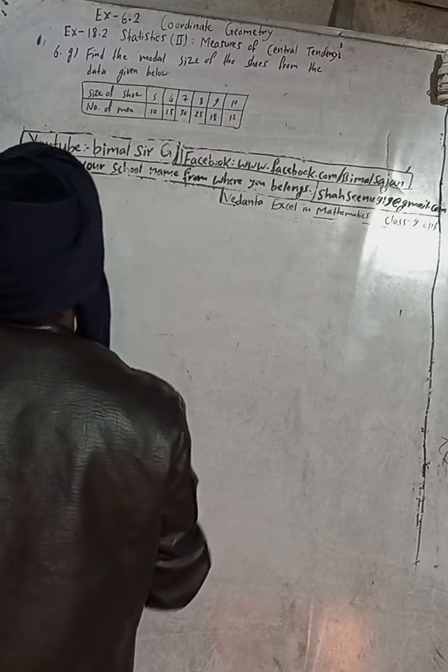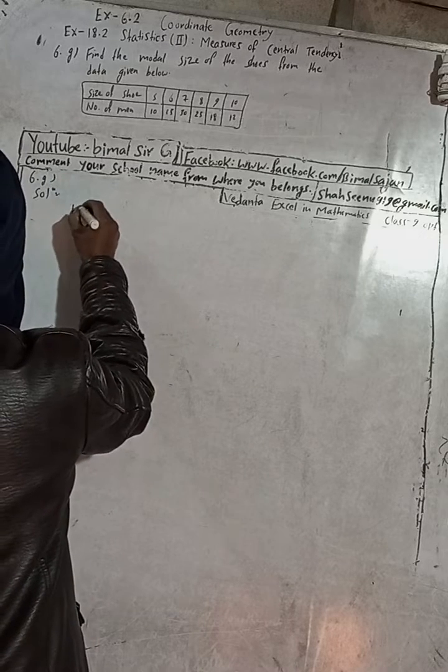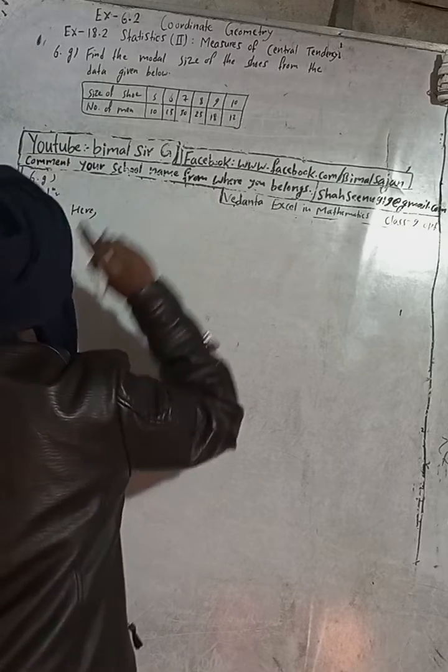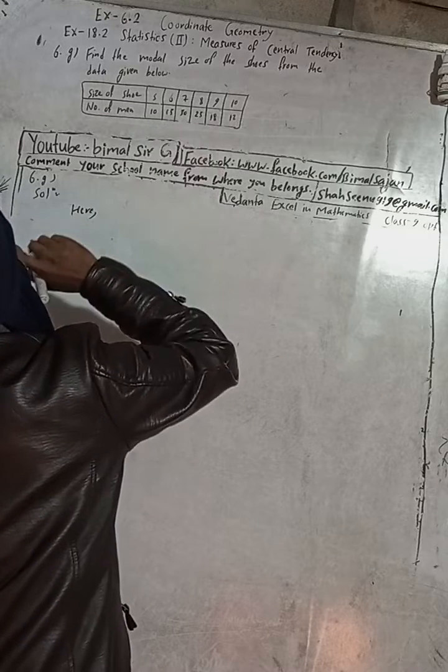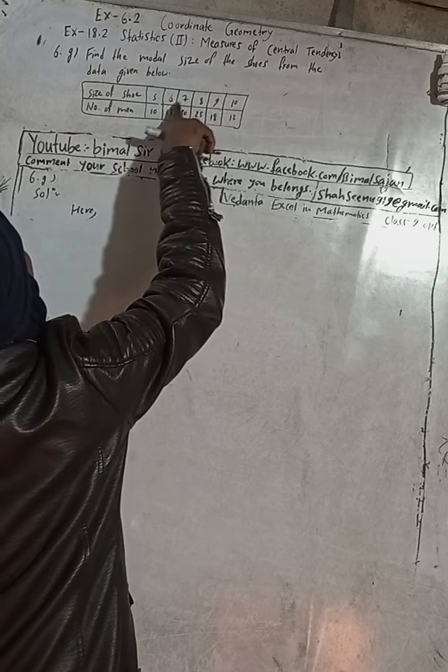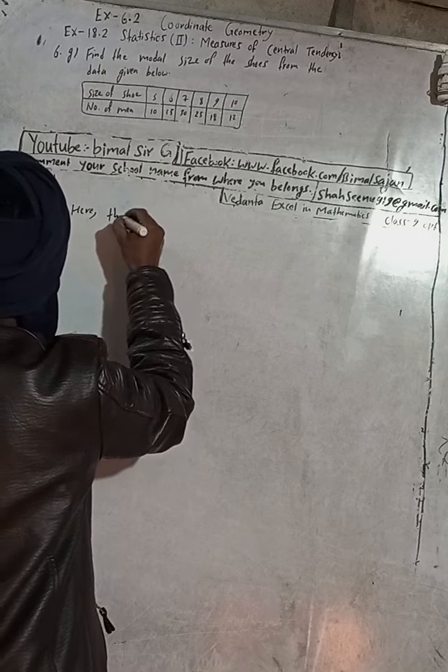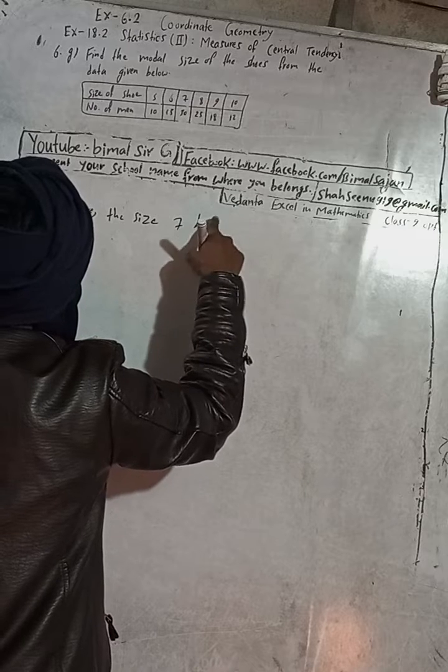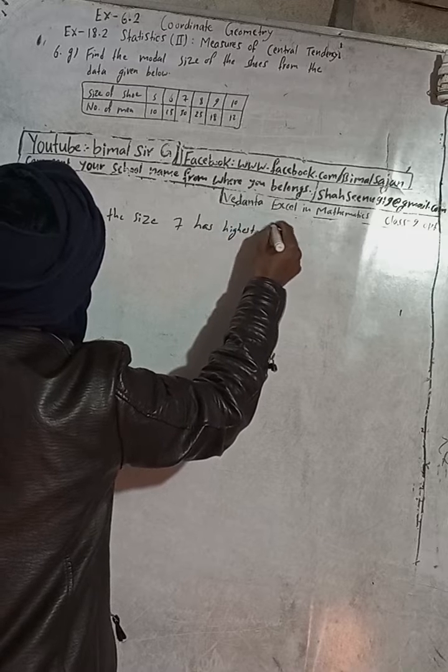Now we can write the solution here. Here, the highest frequency is 30. Okay, so you can write the highest frequency is 30. Therefore, the modal size of the shoe is equal to 7. Otherwise, you can write here the size 7 has the highest frequency.